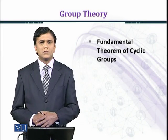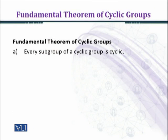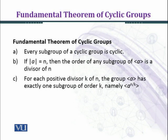In this module we shall state and prove the Fundamental Theorem of Cyclic Groups. Part A: every subgroup of a cyclic group is cyclic. Part B: if the order of a equals n, then the order of any subgroup of the cyclic group generated by a is a divisor of n. Part C: for each positive divisor k of n, the subgroup generated by a has exactly one subgroup of order k, namely a raised to the power n over k. In part C we have to prove existence and uniqueness.